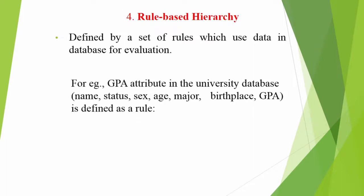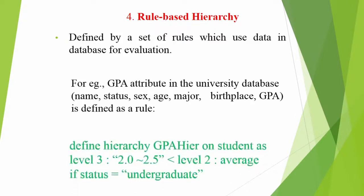Four: rule-based hierarchy. A rule-based hierarchy is defined by a set of rules which use data in the database for evaluation. Again, consider the university database with attributes name, status, sex, age, major, birthplace, and GPA. A simple rule for defining GPA looks like: define hierarchy GPA higher on student as level 3: 2.0 to 2.5, less than level 2 average, if status is equal to undergraduate.